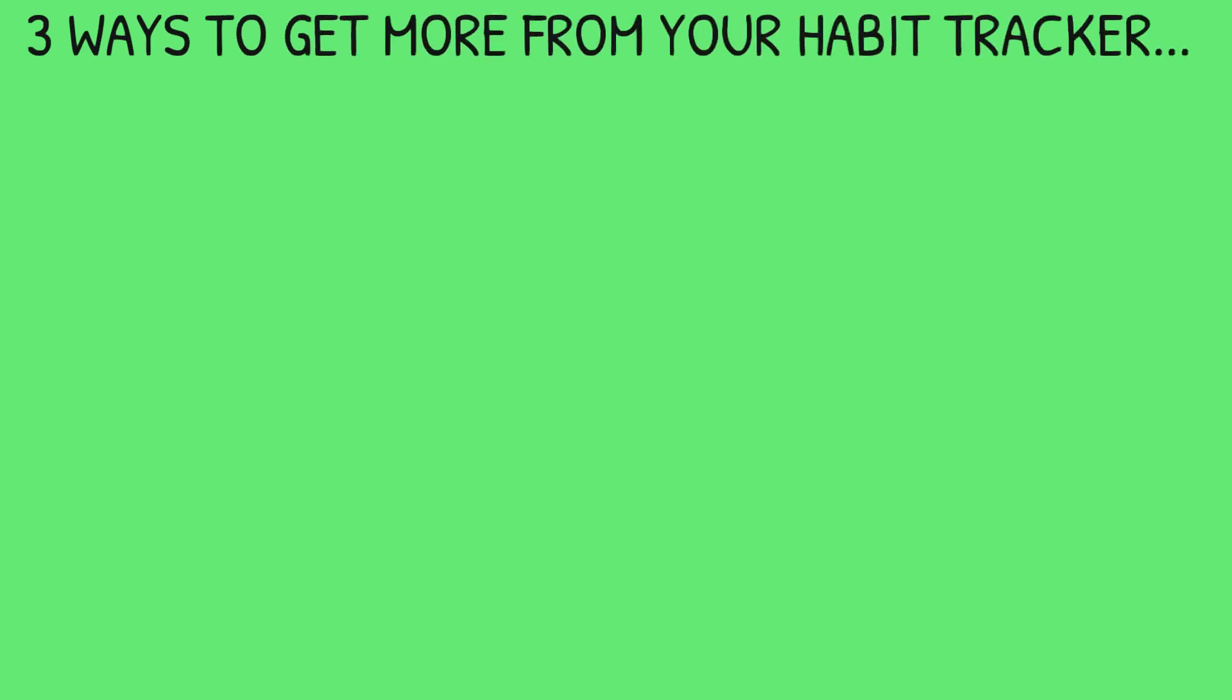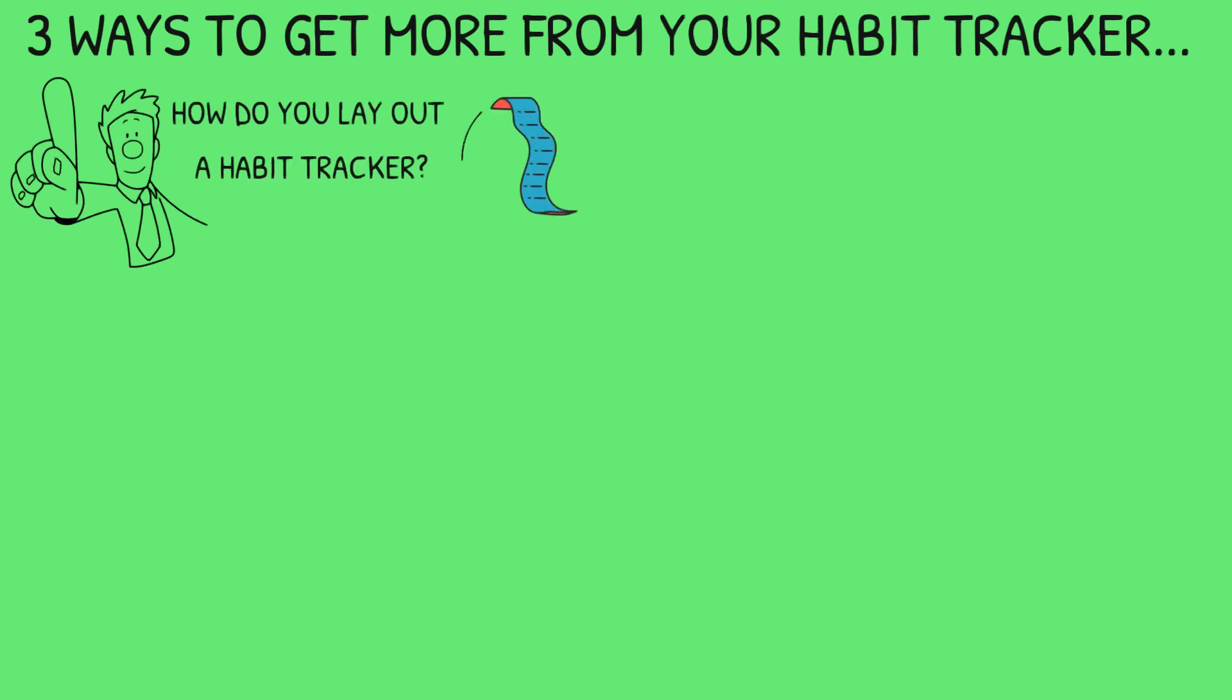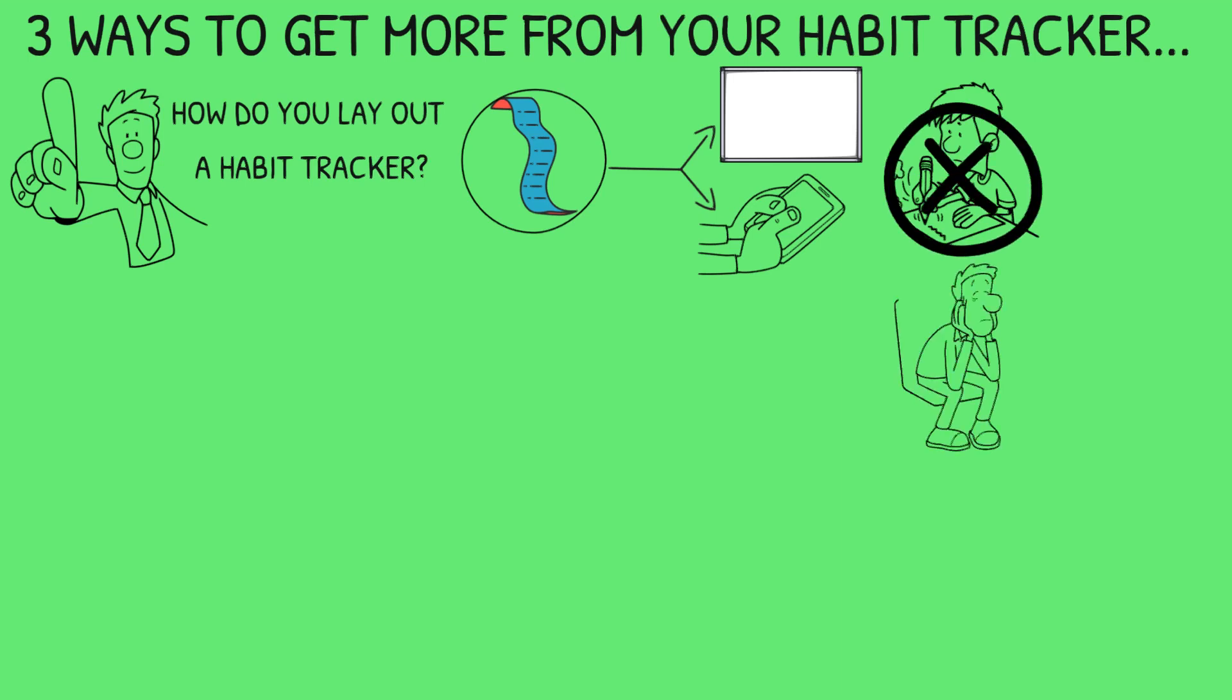Three ways to get more from your habit tracker. But firstly, how do you actually lay out a habit tracker? Well, for this specific habit tracker, I suggest you do it on a whiteboard or on your phone or computer notes, so you don't have to constantly rewrite your habits. It'll get tedious and boring, and in the end you might stop doing it. You write your habits from top to bottom in a list, in no particular order.